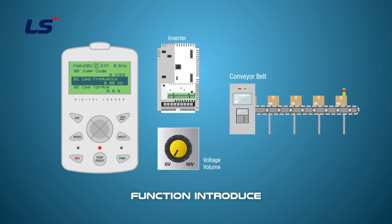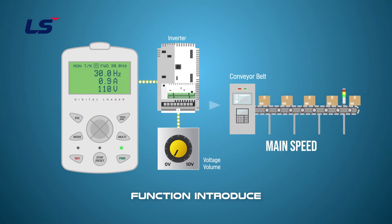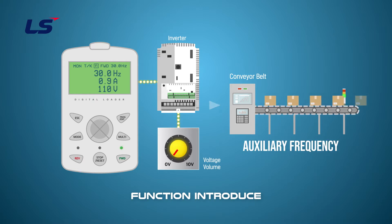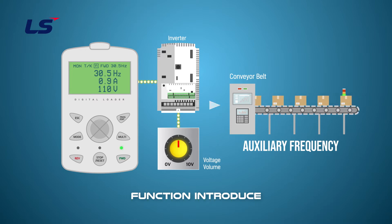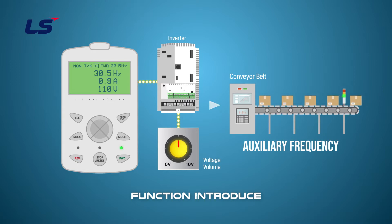When programming the operating frequency in the inverter, the frequency value is set at the main speed. In the case of auxiliary speed, it is used when fine adjustment is required while operating at the main speed, and the frequency value is controlled by using a separate input signal such as a volume resistance. Normally, it is used when precise speed control is required during conveyor operation or when there is a need for variable speed control.